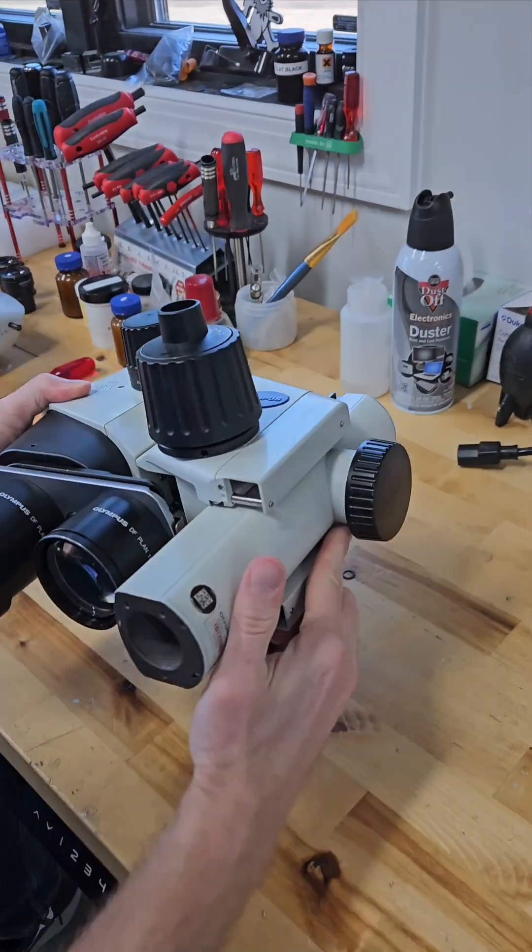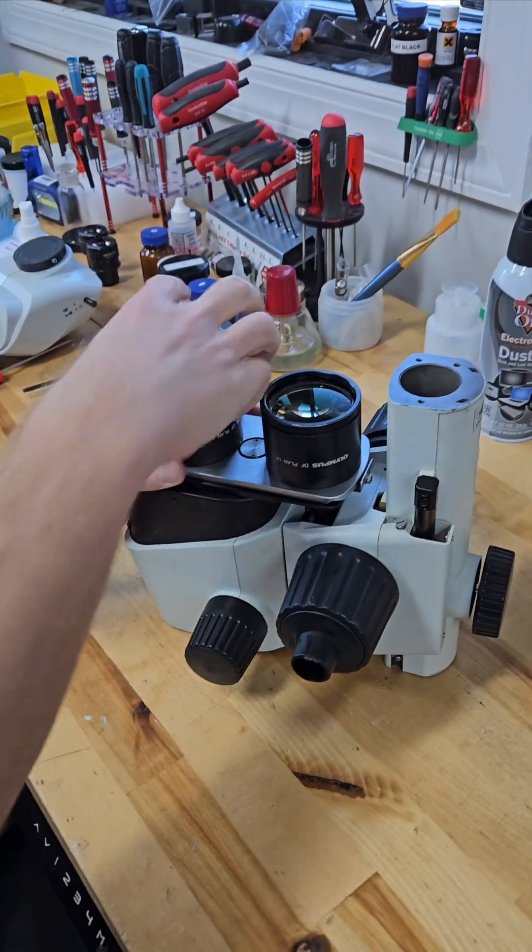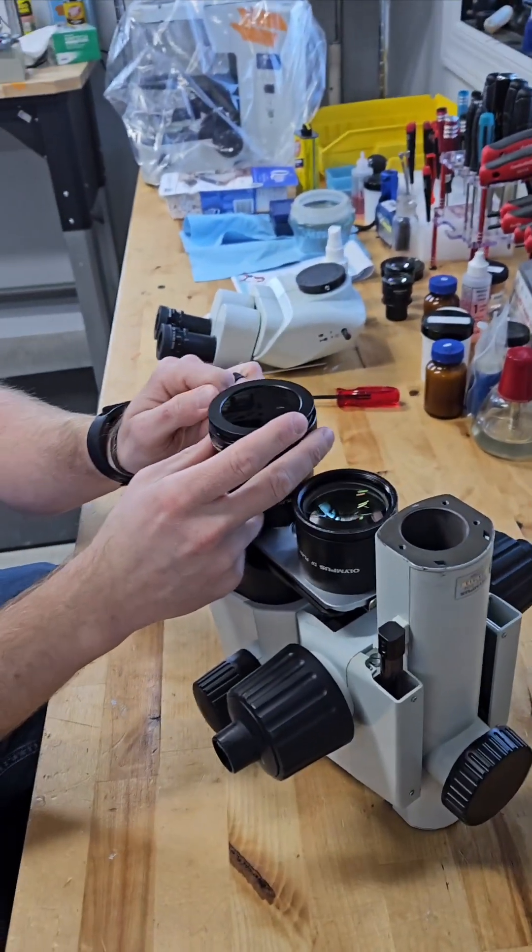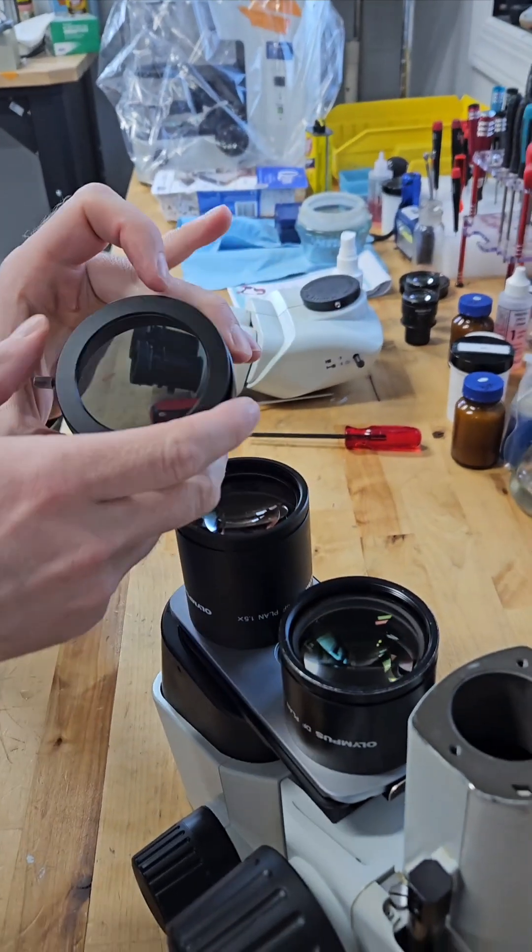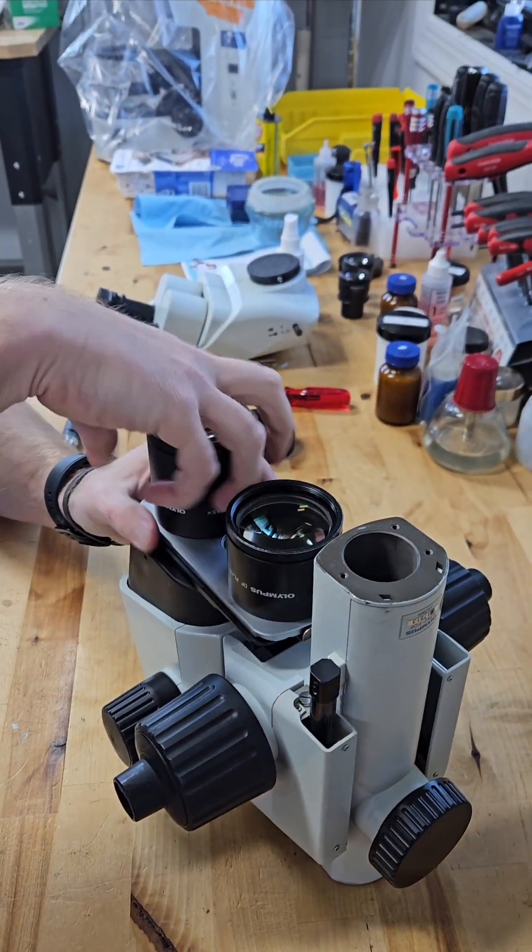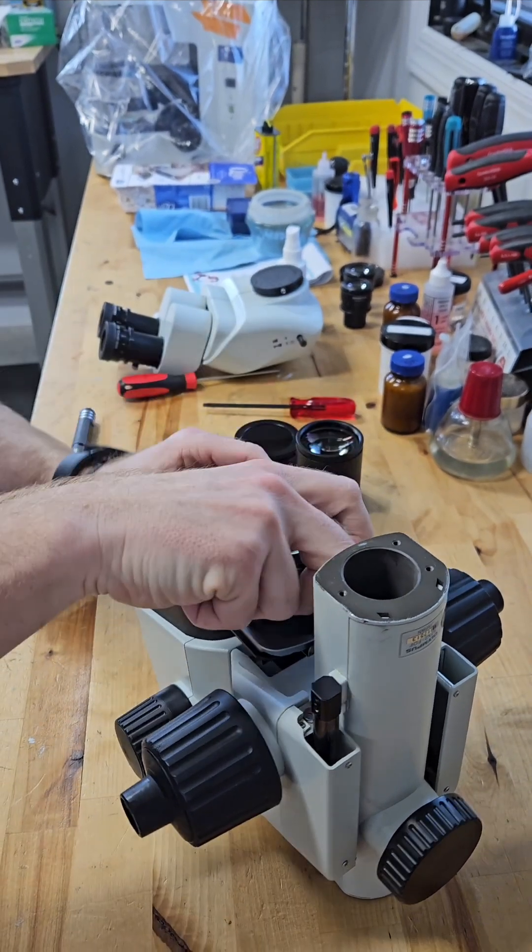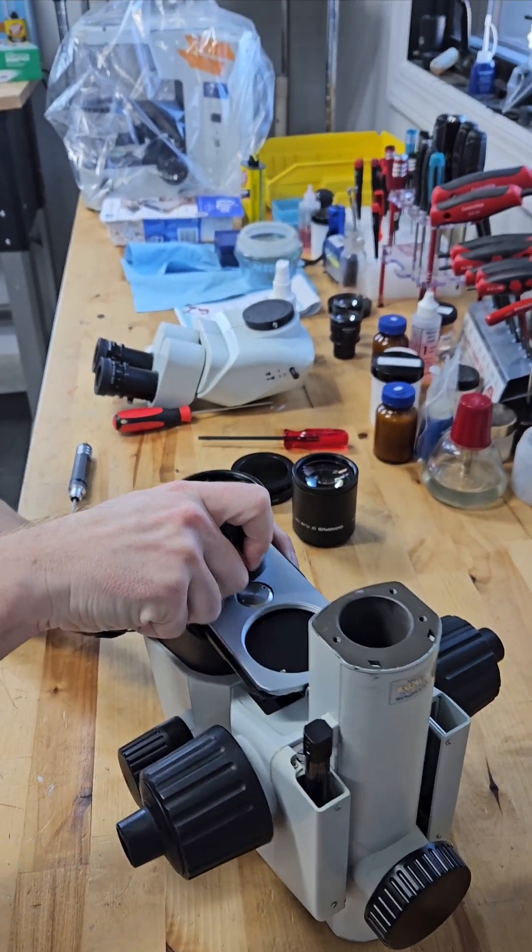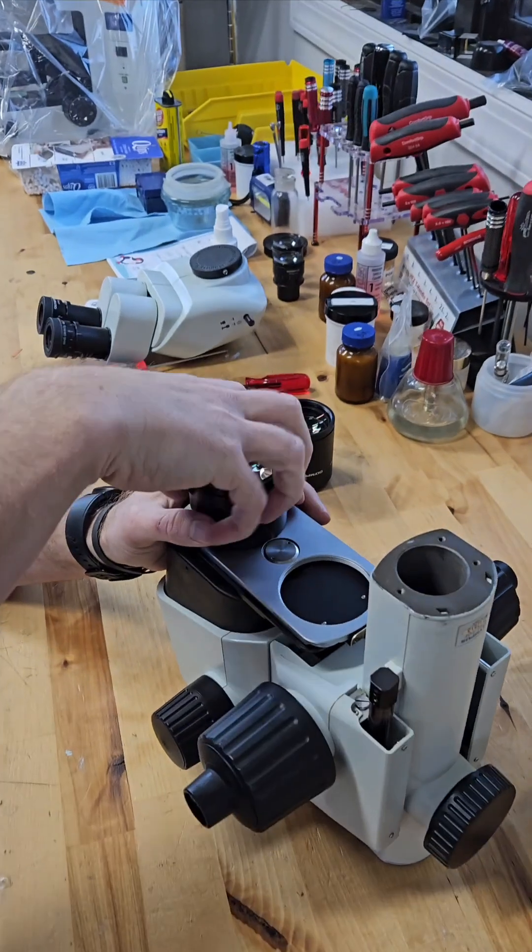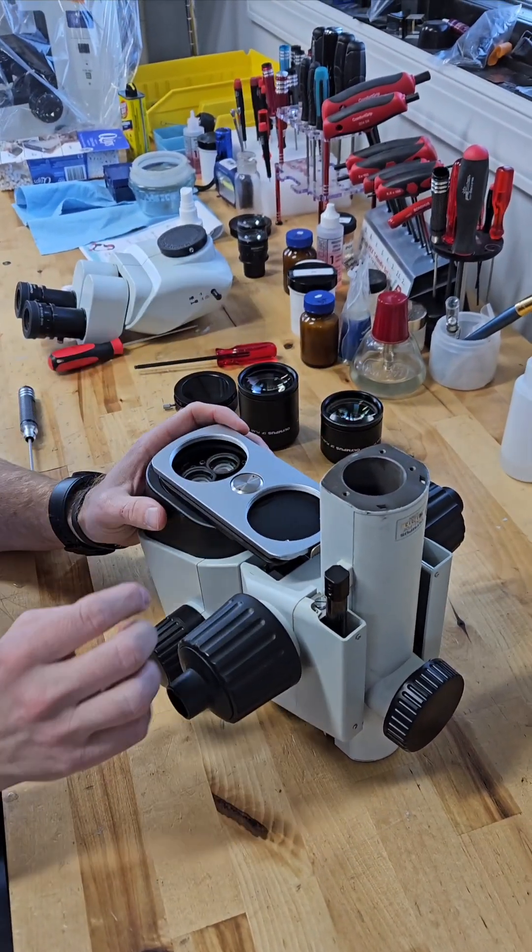We're going to move this back in. So, the lenses. We have an analyzer on this particular model. It comes off with a knurled screw. We're going to take that off, we're going to remove each objective.